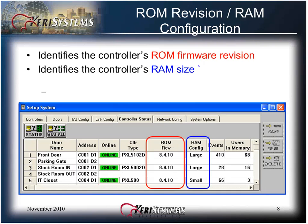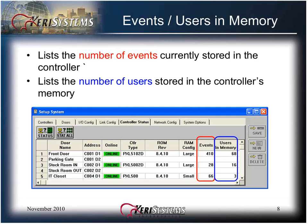The ROM revision column identifies the controller's firmware revision, and the RAM configuration identifies the controller's RAM size. RAM size correlates to the number of users that can be assigned to that controller. The event users in memory columns list the number of events currently stored in the controller. The maximum number of controller events is 3640. The users in memory list how many users are stored in the controller's memory. This number varies depending on the model of the controller.